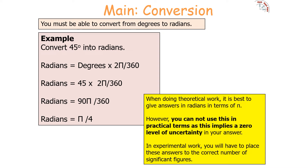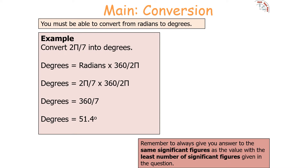You must also ensure that you use the correct number of significant figures. This is important when giving answers in terms of π, because π is an irrational number with an infinite number of significant figures. In practical terms, we can't use π directly as this implies zero uncertainty. In experimental work, you'll always need to place your answers to the correct number of significant figures. You also need to be able to convert from radians into degrees.